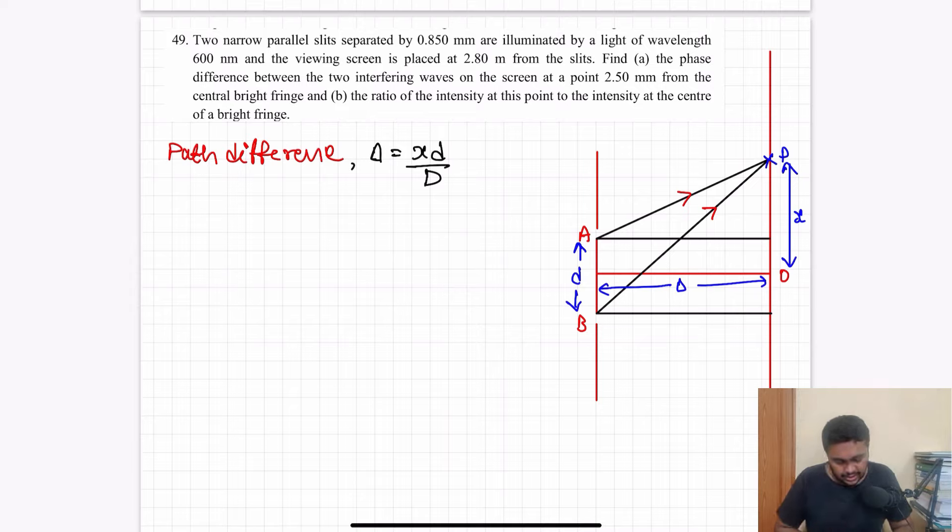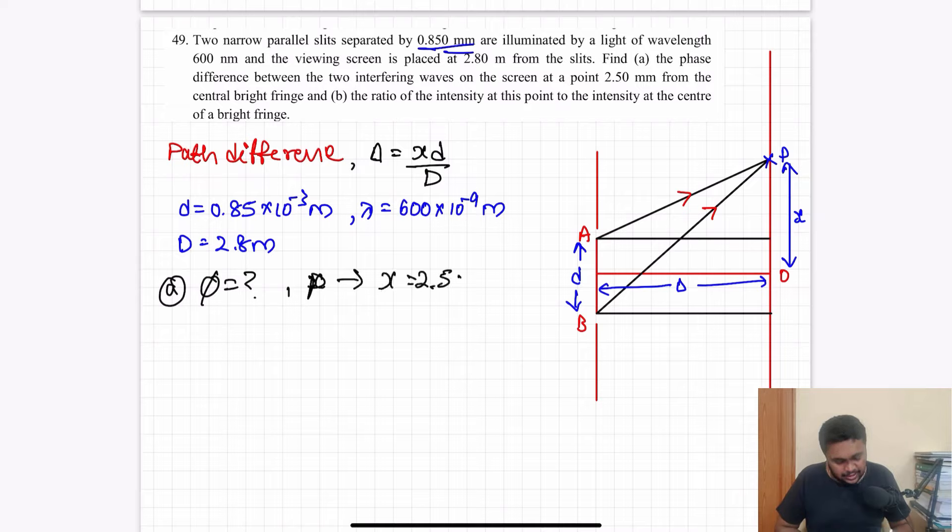They have given the distance of separation between the two slits small d equal to 0.85 millimeter, that is 0.85 times 10 power minus 3 meters. Next, the wavelength of the light used, lambda is equal to 600 nanometer, 600 into 10 power minus 9 meters. Viewing screen is placed so capital D equal to 2.8 meters.